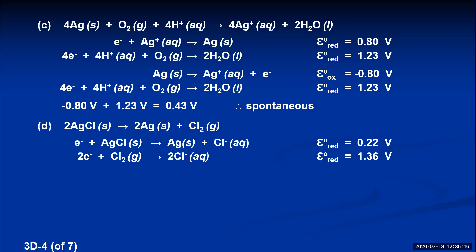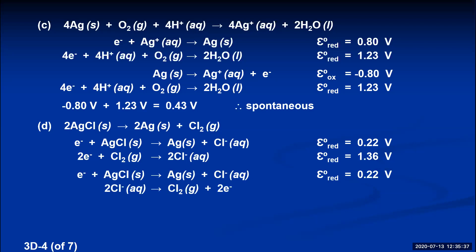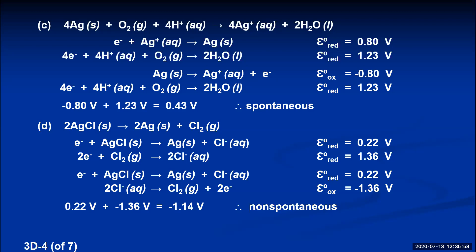Now, can we make those two add up to the given reaction? The silver chloride is already on the proper side and the silver is on the proper side, but the diatomic chlorine reaction must be reversed. The top reaction stays with a potential of 0.22, but reversing the chlorine reaction gives 2Cl⁻ → Cl₂, now an oxidation with a potential of negative 1.36. Multiplying the top reaction by two allows the electrons and chlorides to cancel out, giving us the reaction we want. Adding the voltages gives a negative result, so this reaction is non-spontaneous as written.